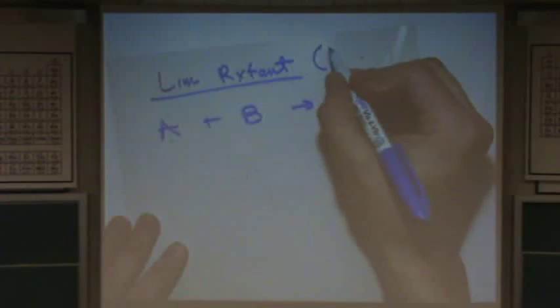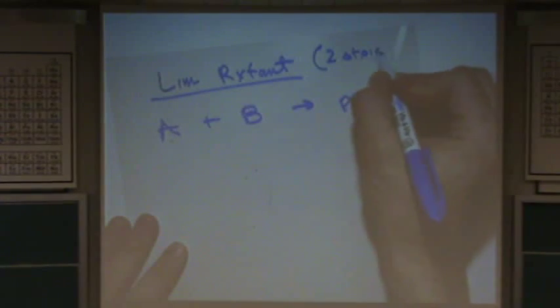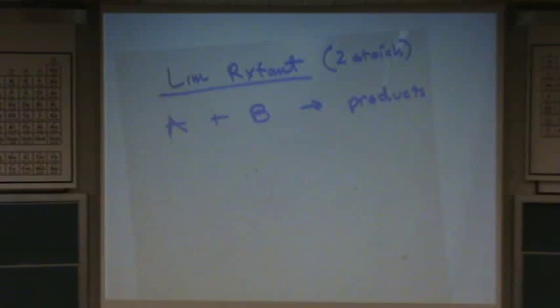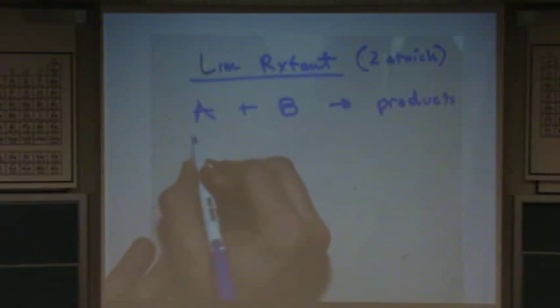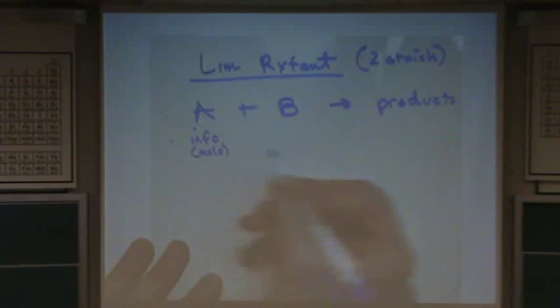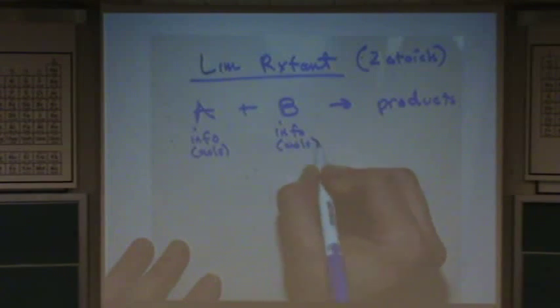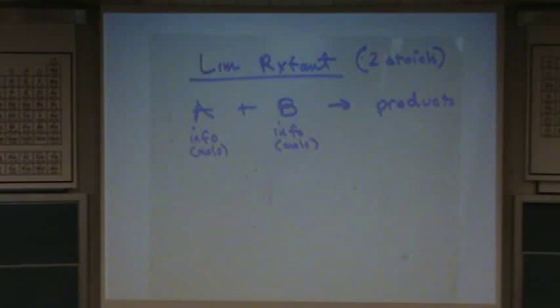You want to think of this as two stoichiometry problems. It may or may not say the word limiting. If it does, it's a no-brainer that it's one of these. If it doesn't, you need to be given info about A that is related to moles or can be changed to moles, and info given about B that also can be changed to moles, then you have a limiting reactant problem.